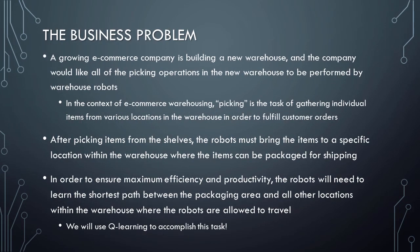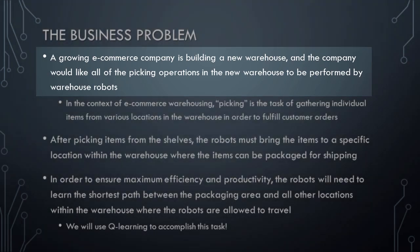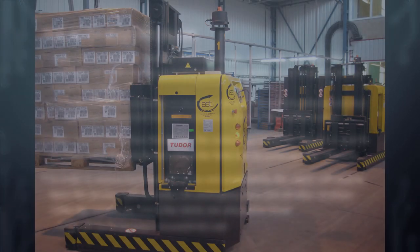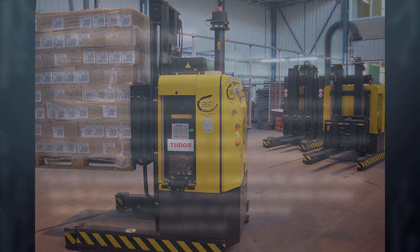Let's begin by introducing the business problem that we'll be solving in this lesson. Imagine that a growing e-commerce company is building a new warehouse, and that the company would like all of the picking operations in the new warehouse to be performed by warehouse robots. Warehouse robots are autonomous ground vehicles that are designed to automatically handle many common warehouse-related tasks, such as picking.